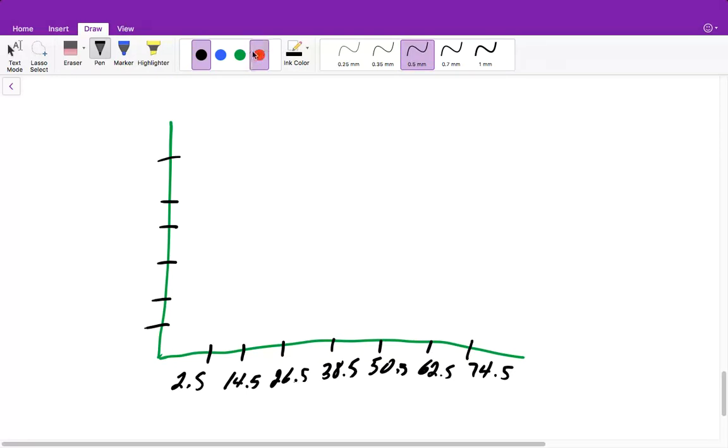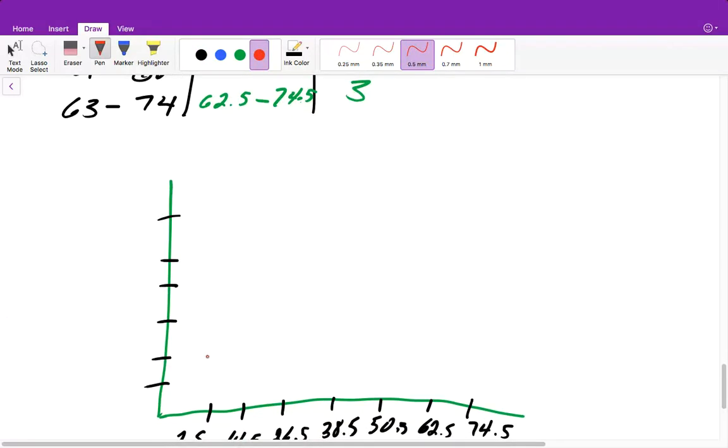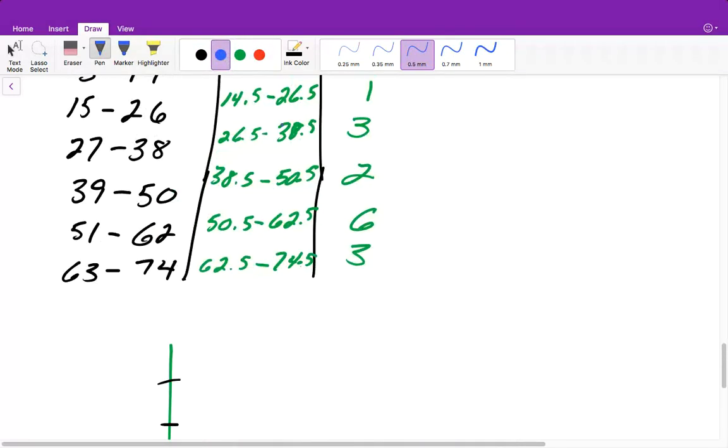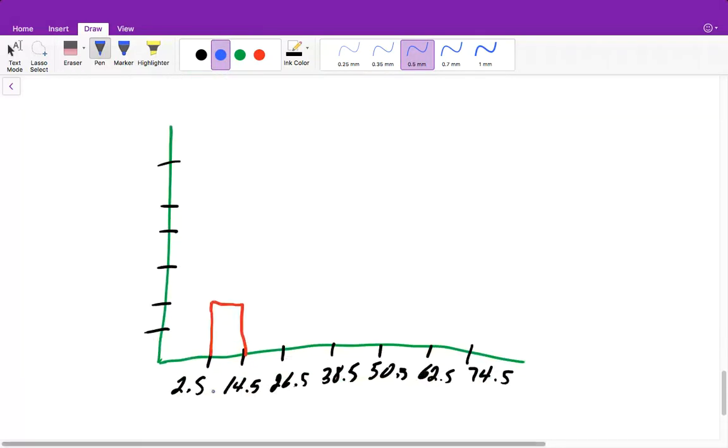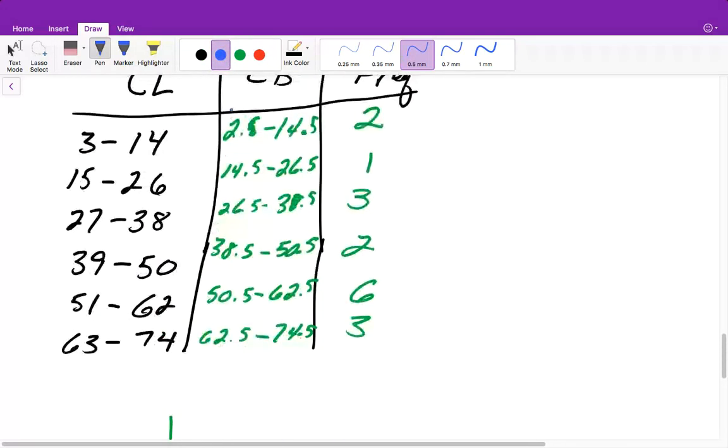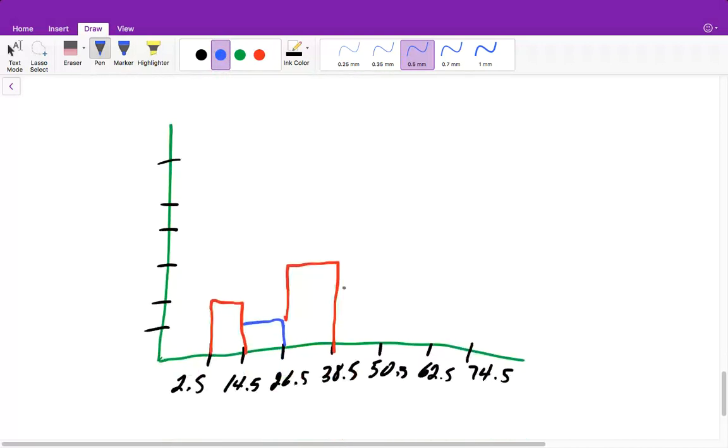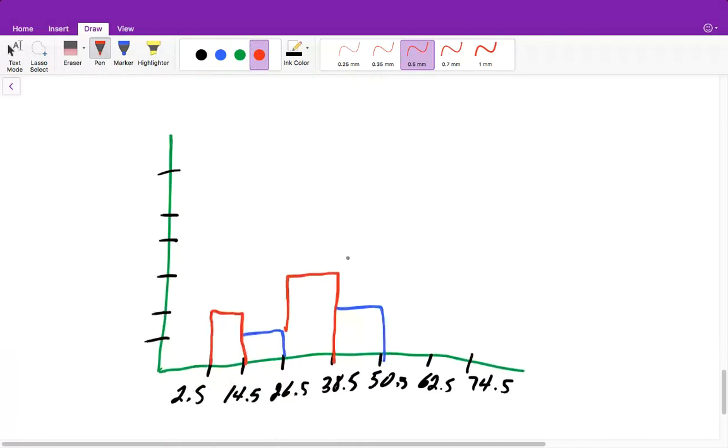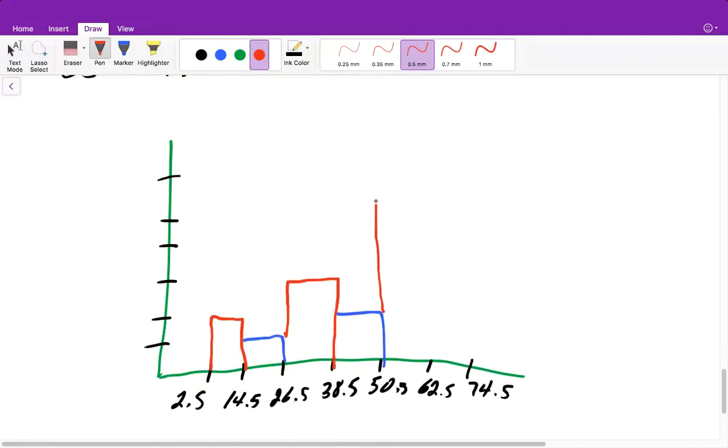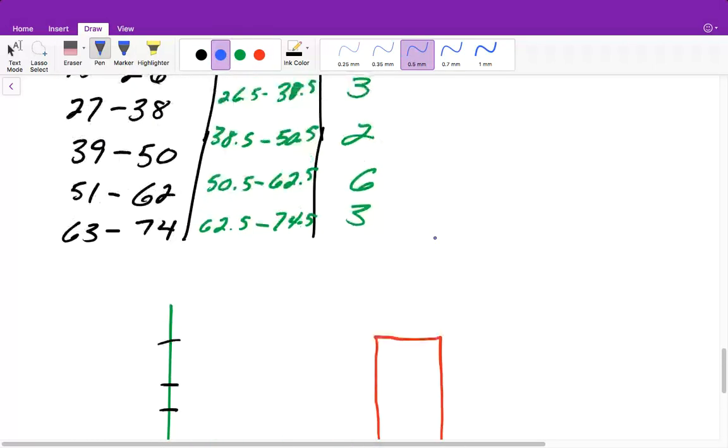All right, so now I went ahead and filled this in. And now I will draw my bar graphs. So the first one, we have a frequency of 2, so we will go up to the 2. The second one, we have a frequency of 1. The third one, we had a frequency of 3, so that one will go up to here. Our fourth one, we have a frequency of 2. Next one, we had a frequency of 6, so that one's all the way at the top. And then our last one, we have a frequency of 3.